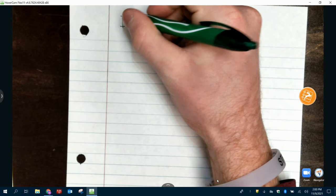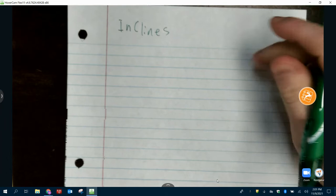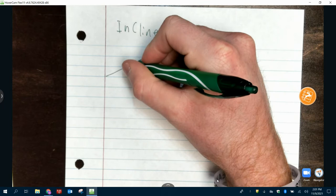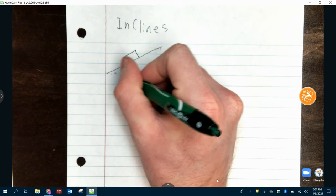At the top of our page, we're going to write inclines because that's what we're learning about. Make sure you have a sheet of paper out. I don't know why I wrote incline so goofy looking, but I did. We're going to draw a box on an incline. An incline is basically a ramp that's shaped like a triangle.